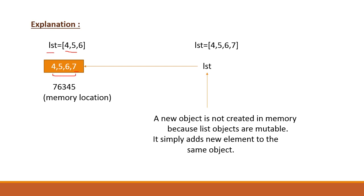The initial list with values 4, 5, 6 had memory location 76345. List is a mutable object, its value can be changed. So when you appended 7, the object remained the same at the same memory location, and now the list is tagged to this.